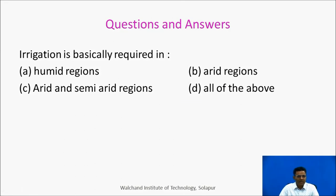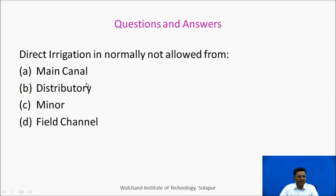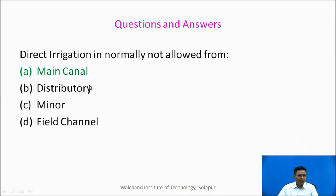Question: Irrigation is basically required in which regions — humid, arid, or arid and semi-arid regions? Answer: irrigation is essentially required in arid and semi-arid regions. Next question: direct irrigation is normally not allowed from which canal — main canal, distributory, minor, or field channel? Answer: main canal. The main canal transfers a very large amount of discharge; water is distributed to the field through field channels and never directly from the main canal.